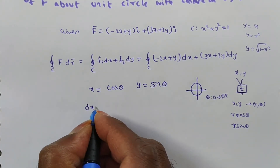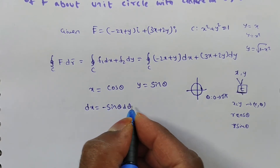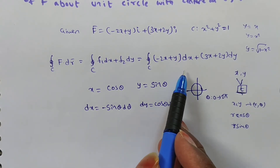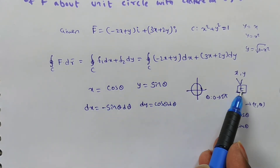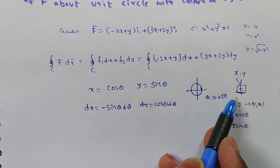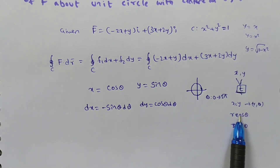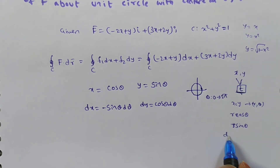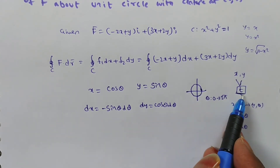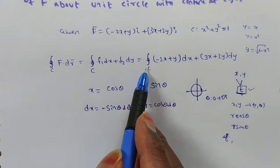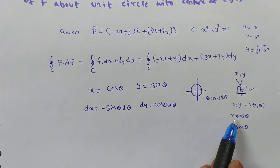In parametric form, both x and y are changed into one independent variable — here θ. In polar form, x and y are expressed in terms of r and θ (two variables), requiring both r and θ limits. For a line integral, we only need θ limits. Parametric form uses one variable; polar form uses two. For double integrals, polar form is needed.